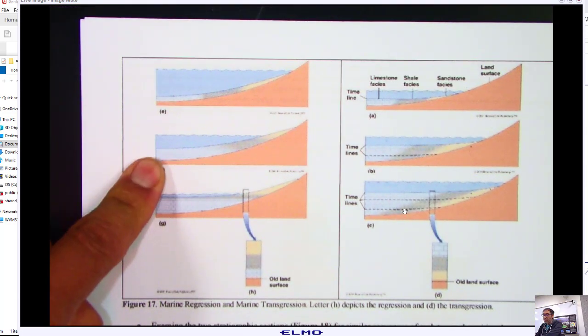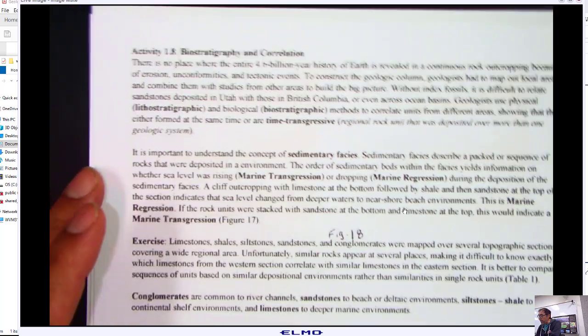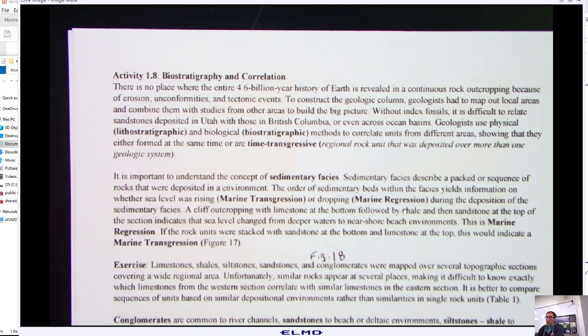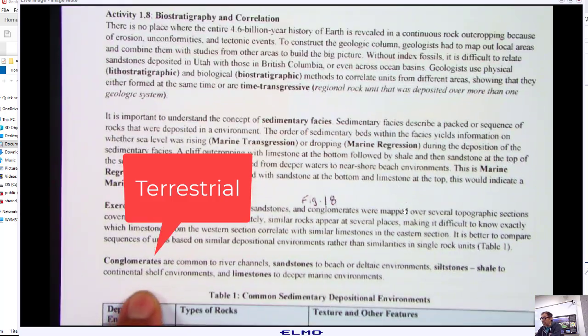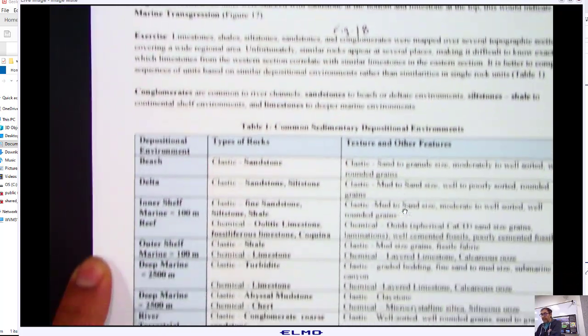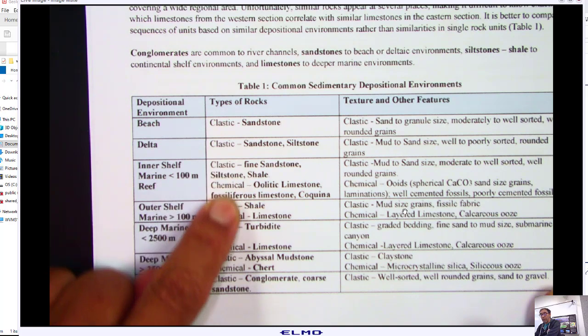This figure shows the marine regression and marine transgression. The other important part here, I talk about these facies, the sedimentary facies. Remember, facies is a group or packet of minerals or rocks that give information about an environment. For sedimentary rocks, is it a marine environment, deep marine, shallow marine, a shoreline? Or conglomerate - conglomerates are going to be river channels. The facies, conglomerate facies are river channels, lots of energy, lots of boulders being moved by the water.